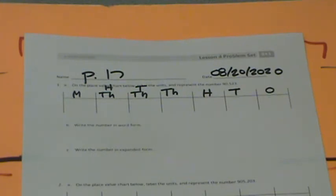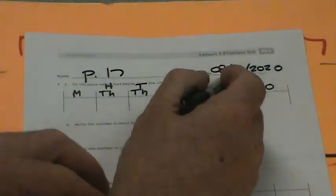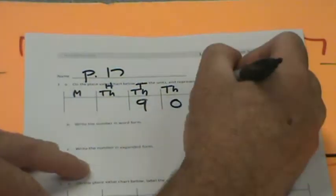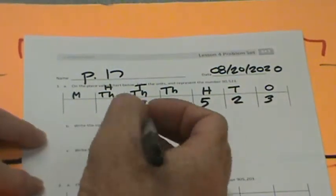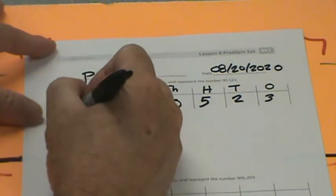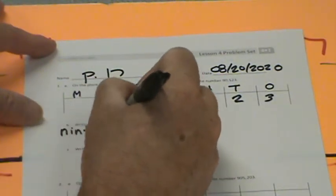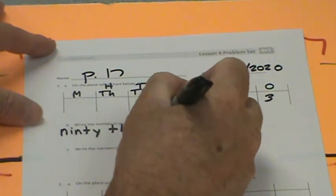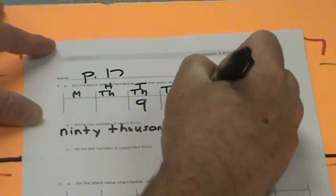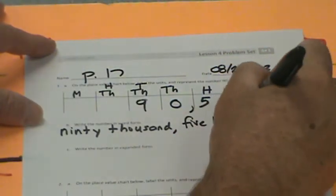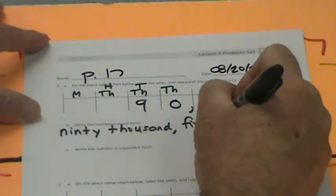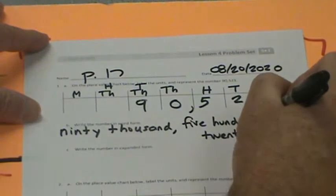The number we're working with is 90,523. Think about 90,000, 0 thousands, 500, 20, and 3 ones. Write the number in word form. Word form is writing it down: ninety thousand, five hundred twenty-three with a little hyphen in there.